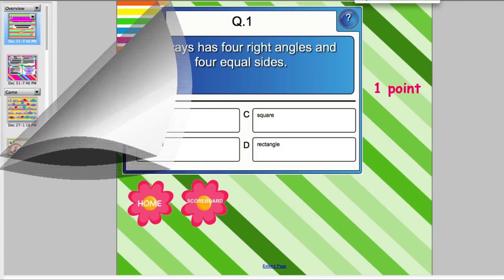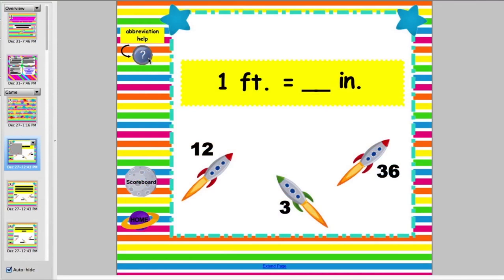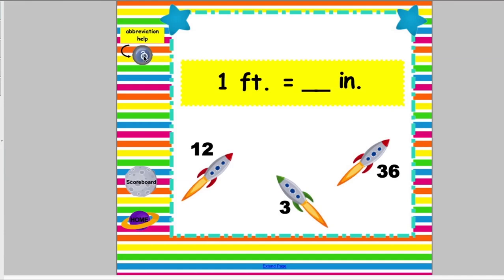In the measurements game, students will practice making conversions with the United States customary units of capacity, length, and weight, and also units in the metric system. A key is provided to help students with abbreviations. Word problems are also included, and for students to self-check their answer, they just need to touch the right rocket ship and it will blast off.